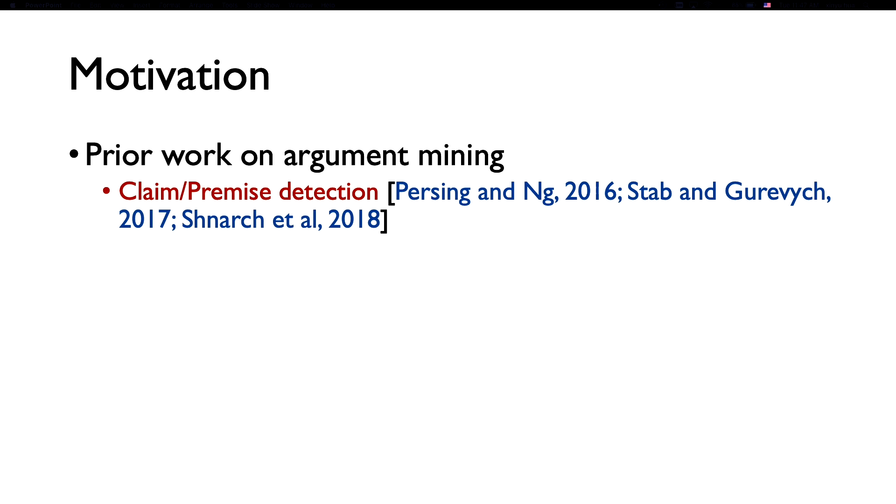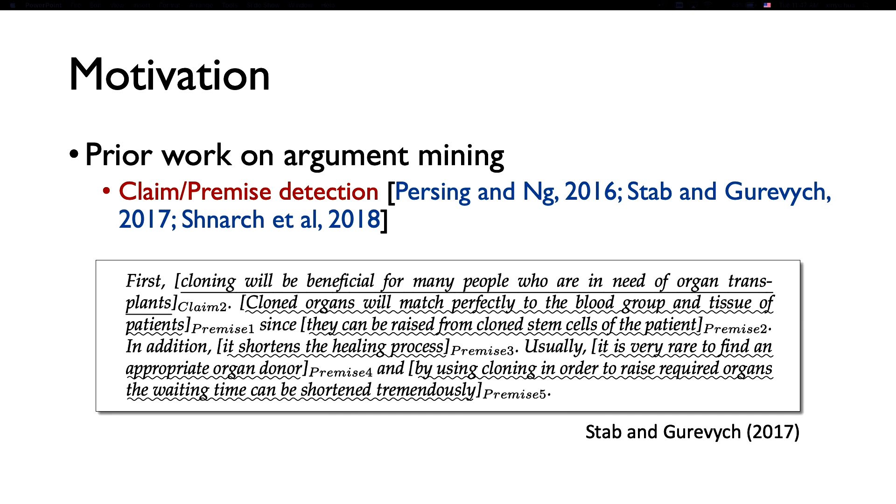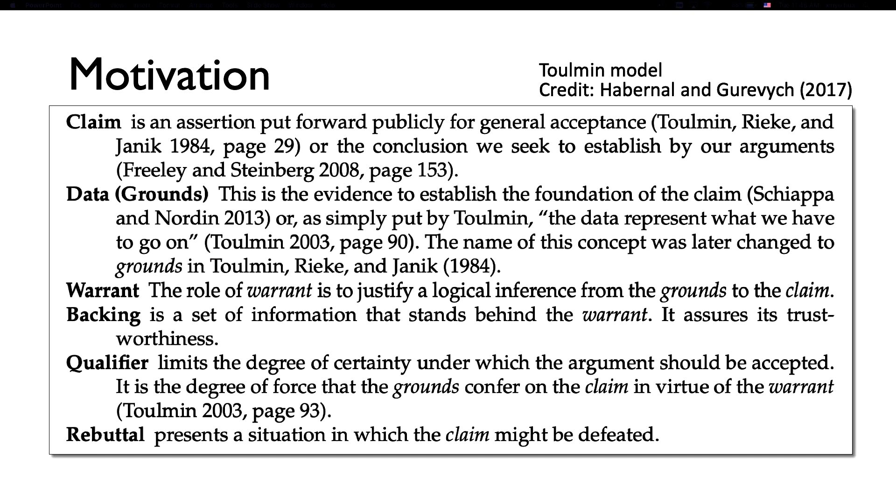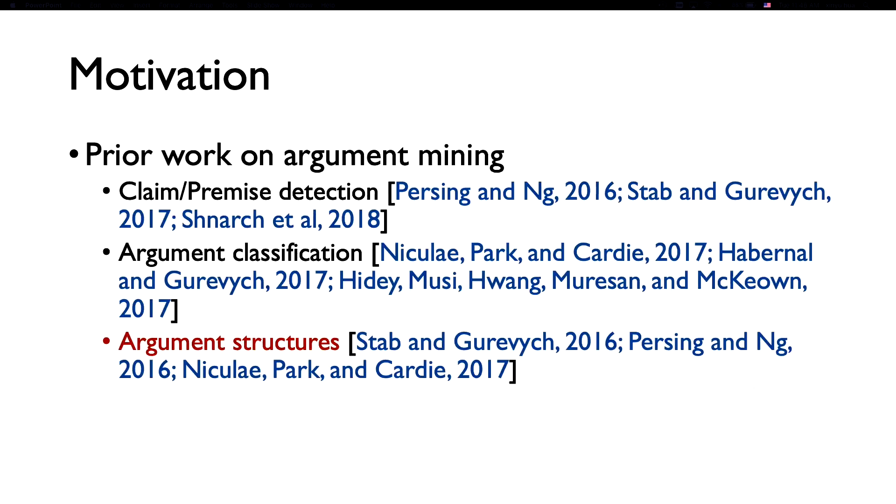Previous work on argument mining research has looked at arguments from three different levels. The most basic task is to identify the argumentative components from free-form text, such as the claim and premise from student essays. On top of that, the arguments are categorized into different types based on the data and task at hand. For example, here they use a schema of six major types based on the function the arguments try to convey. On the highest level, the arguments are structured into some sort of graph representation to reveal the supporting and attacking relation between arguments.